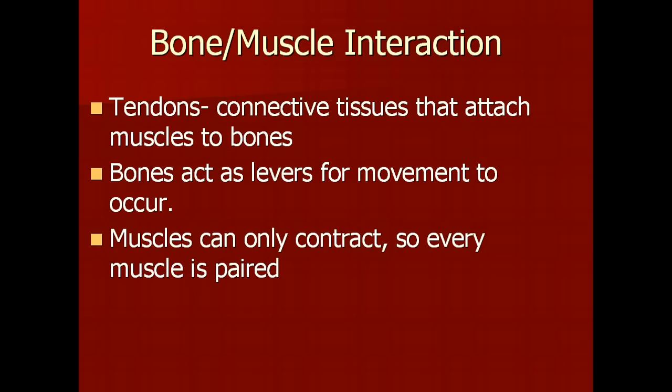If you attended the lecture on the skeleton, you'll know that a tendon is a connective tissue that connects muscle to bones, and that bones are important because they act as levers for movement. Muscles can only contract, so every muscle is paired. For example, when you bend your arm upward at the elbow, the muscle contracting on the front of your upper arm is your bicep. When you straighten your arm back out, the paired muscle is the triceps, located on the back of your upper arm.